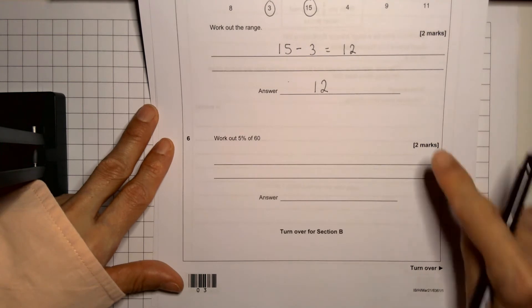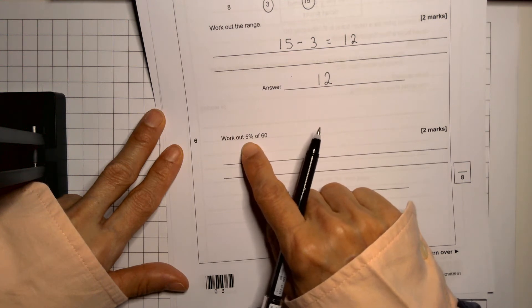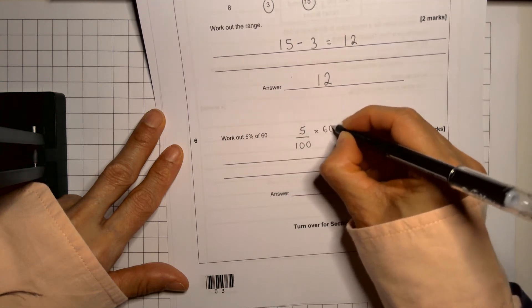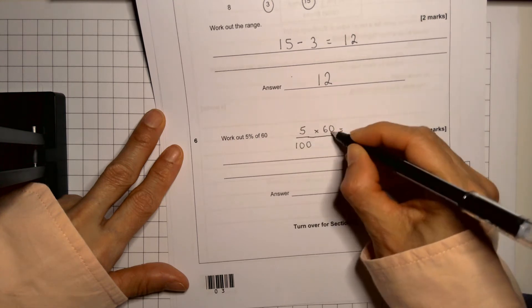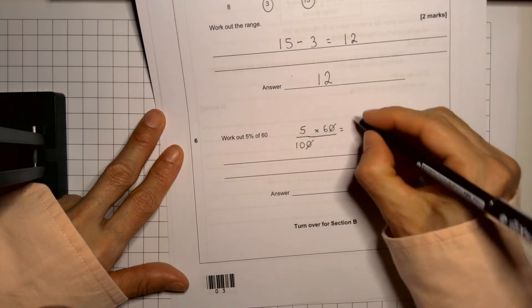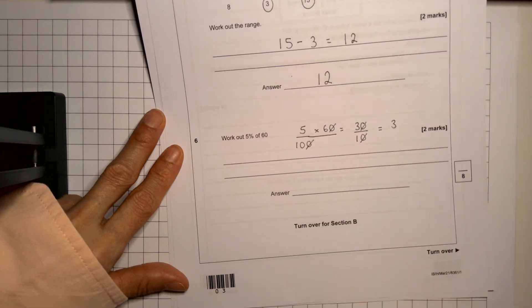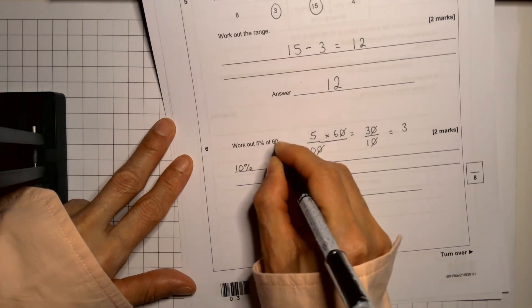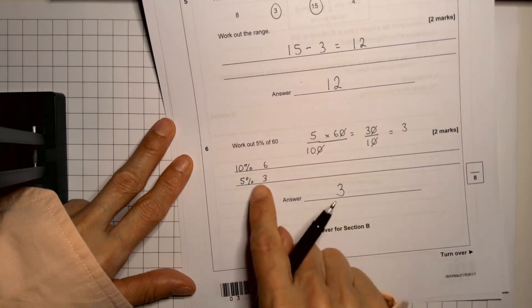Question six is a two mark question asking for a percentage calculation. There are many different ways of doing this. One method is to write out the calculation, which is 5 out of 100 multiplied by 60. We could cancel some zeros. So now we have 5 times 6, which is 30. And on the bottom, we have 10. We could cancel some zeros again. And so the answer here would be 3. A different method is to remember that 10% is the same as 6, but I don't want 10%. I want half of that. Half of 10 is 5. Half of 6 is 3. And you notice we get the same answer.